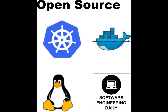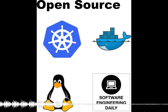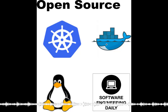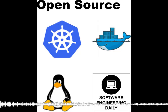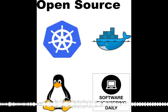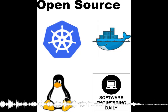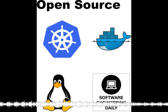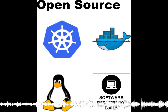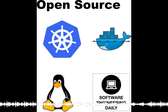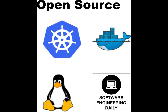Kubernetes is very complete — you can take almost any distributed systems problem and express it using Kubernetes. But learning how to do that takes some time, especially for a new user. There are use cases that are pretty simple where a user might think: why do I need to learn so many concepts just to do something simple?